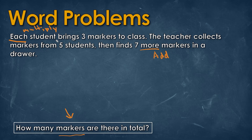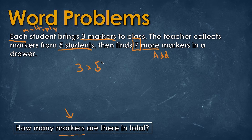Reading the question, it says each student brings three markers to class. The teacher collects the markers from five students, then finds seven more markers in a drawer. So first, we take the three markers and multiply by five students, giving us a total of 15 markers.